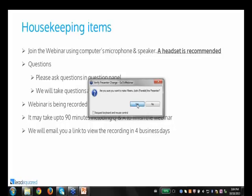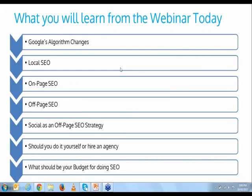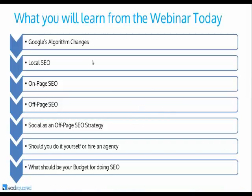Thank you Nilesh. Hi everyone. As Nilesh briefly touched upon what we'll be covering, I'll quickly take you through today's agenda. First, we'll discuss Google's recent algorithm changes. We'll talk about the basics of local SEO, on-page and off-page SEO, and the growing importance of social as an off-page SEO strategy. We'll also answer whether it's wiser to do SEO yourself or hire an agency, and discuss budget options for doing your SEO.